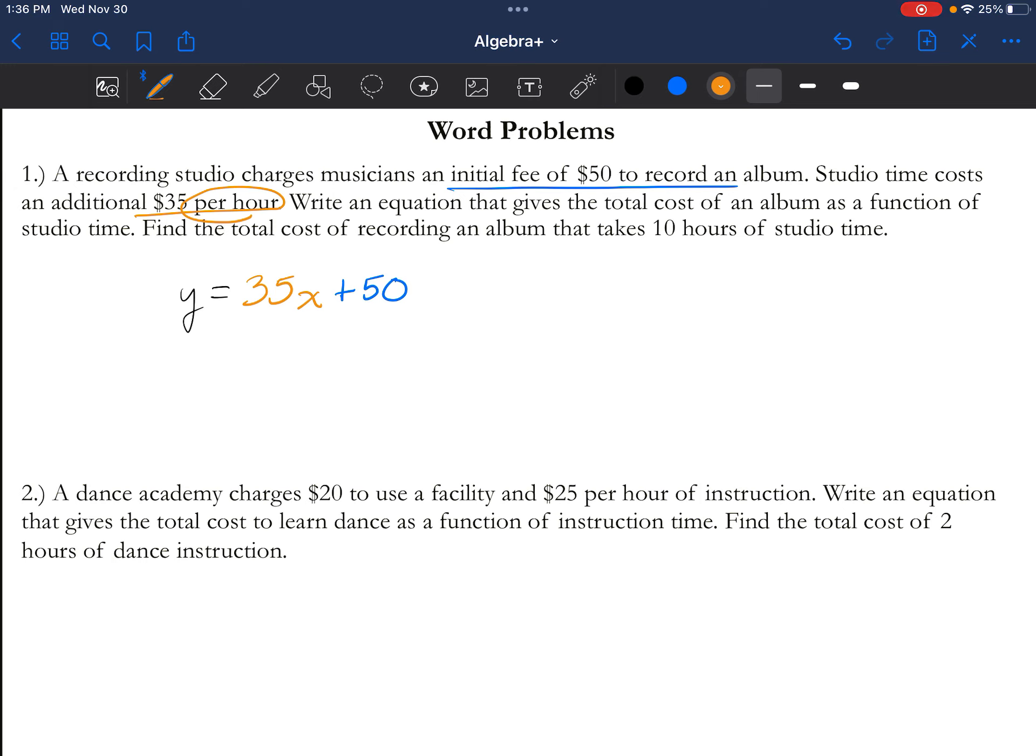So you can immediately say y equals... Also do not forget to define your variable. x equals the number of hours, which we just established. Every hour you spend there, you're going to be spending $35. Great. We wrote an equation that is the first step here. It says write an equation as a function of studio time. Don't worry about when it says as a function of, because this is already set up. We can write y equals 35x plus 50 or we can write f(x) equals 35x plus 50. You can do it either way.